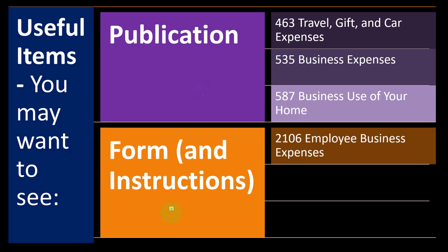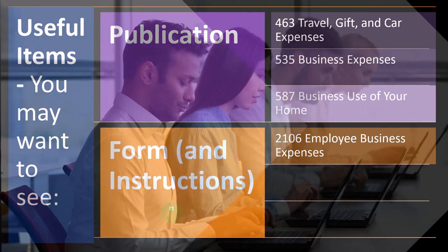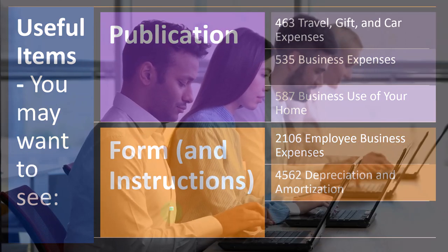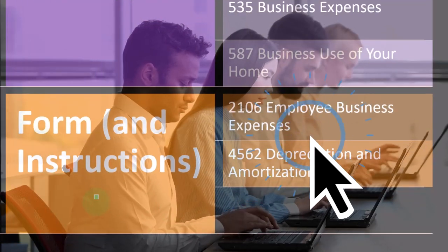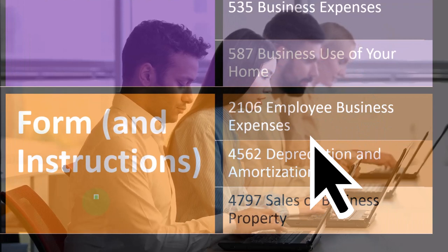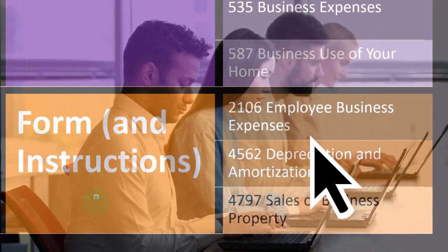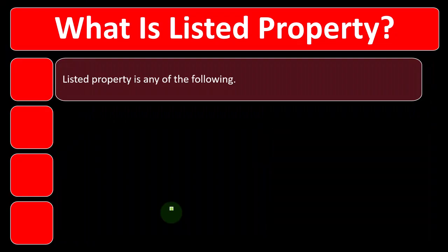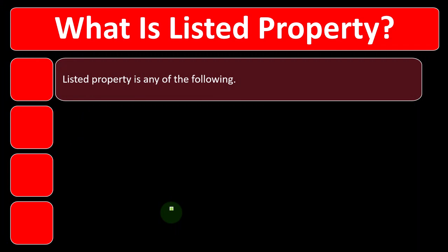Relevant forms and instructions include Form 2106 — employee business expenses; Form 4562 — depreciation and amortization; and Form 4797 — sales of business property. You can check those out for more research, and look at the instructions for those forms as well.